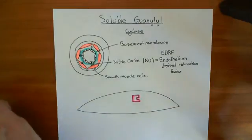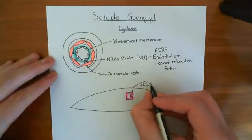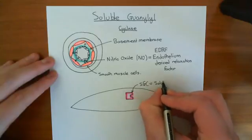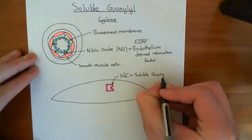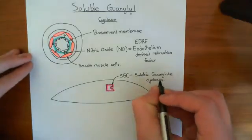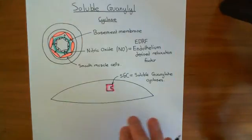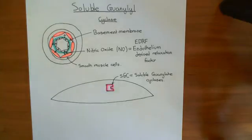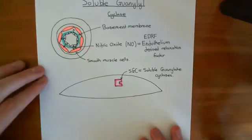This is the soluble guanylate cyclase enzyme, often abbreviated to sGC, because there are different types of guanylate cyclase enzymes. Some are associated with the plasma membrane, and those are not soluble guanylate cyclases. These ones are free in the cytoplasm, which is why they're called soluble guanylate cyclases. There are two types of soluble guanylate cyclases: ones found in the endothelial cells of blood vessels, and ones found in neurons in the brain — and the ones in the brain are actually membrane-associated. Certainly the ones in smooth muscle cells are free in the cytoplasm.